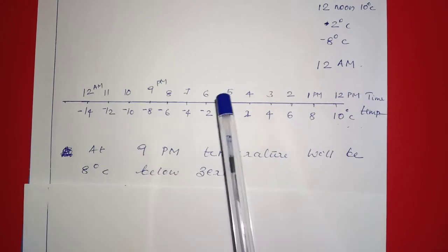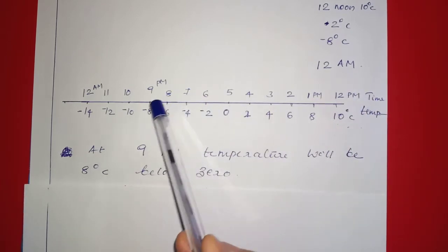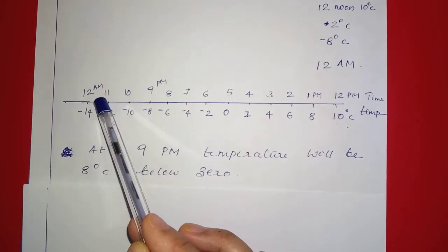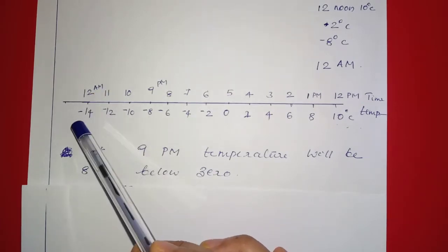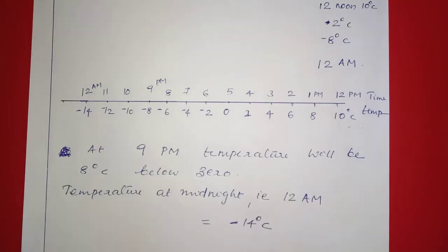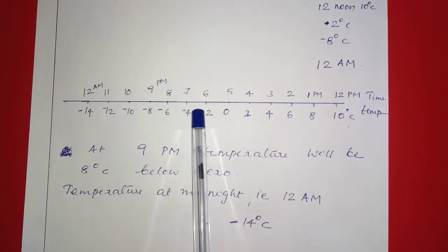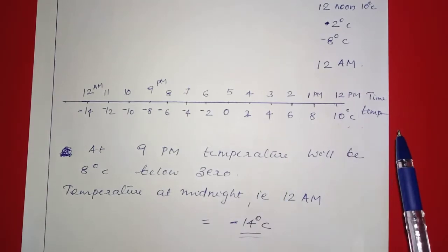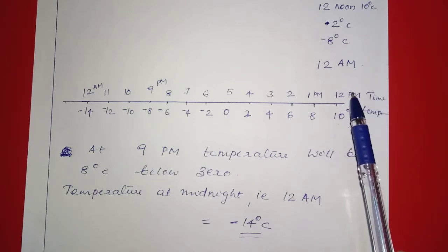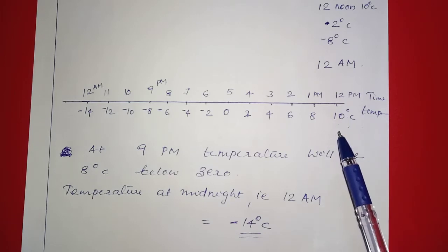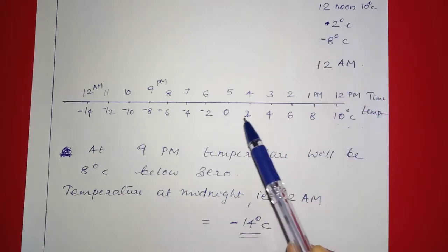What would be the temperature at midnight? Midnight is 12 hours after 12 noon. Starting at 10 degrees and decreasing 2 degrees per hour for 12 hours gives 10 minus 24, which equals negative 14 degrees Celsius. So the temperature at midnight would be negative 14 degrees Celsius.